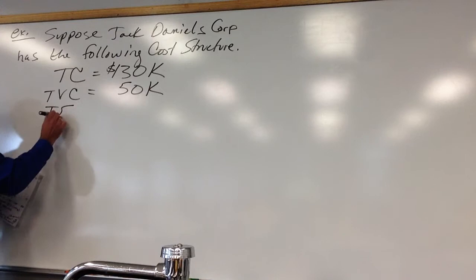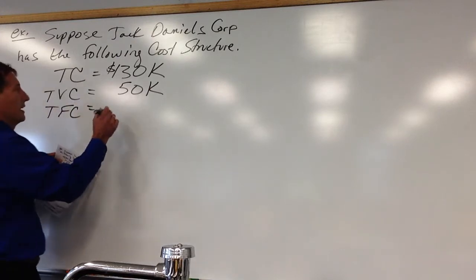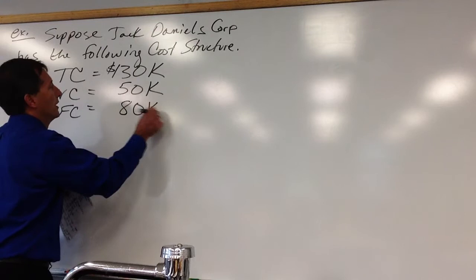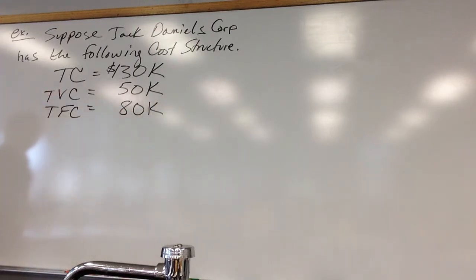Total variable cost is $50,000. And Jack has total fixed cost of what? You tell me. Fill in the blank. Total cost of $130,000, total variable cost of $50,000. $80,000. So the sum of those two gives us our total.